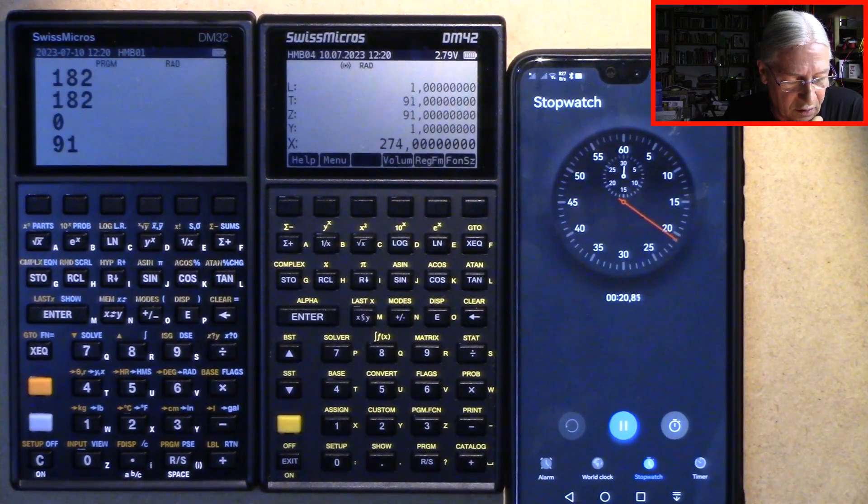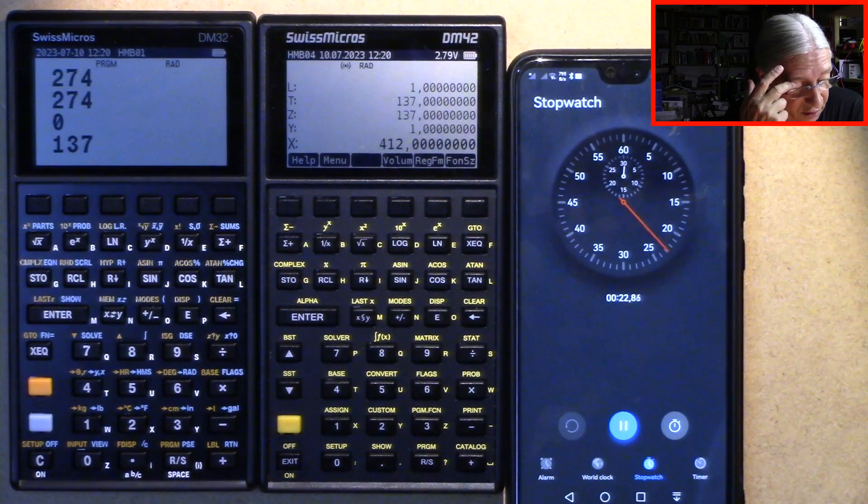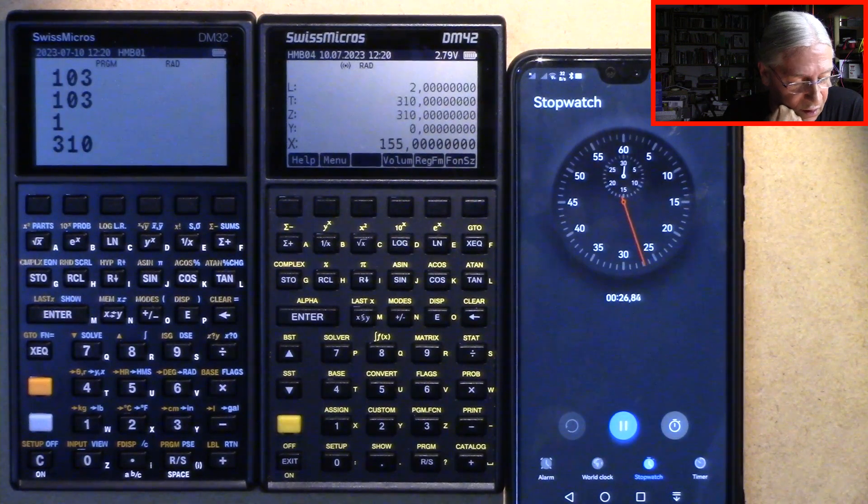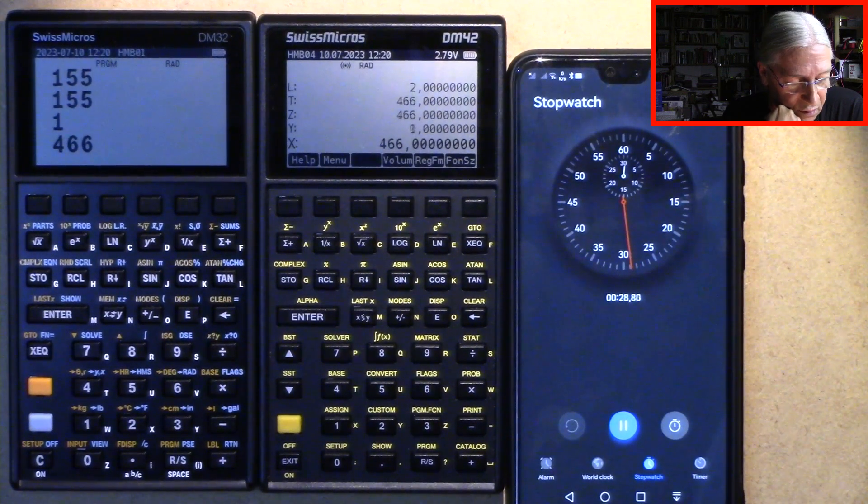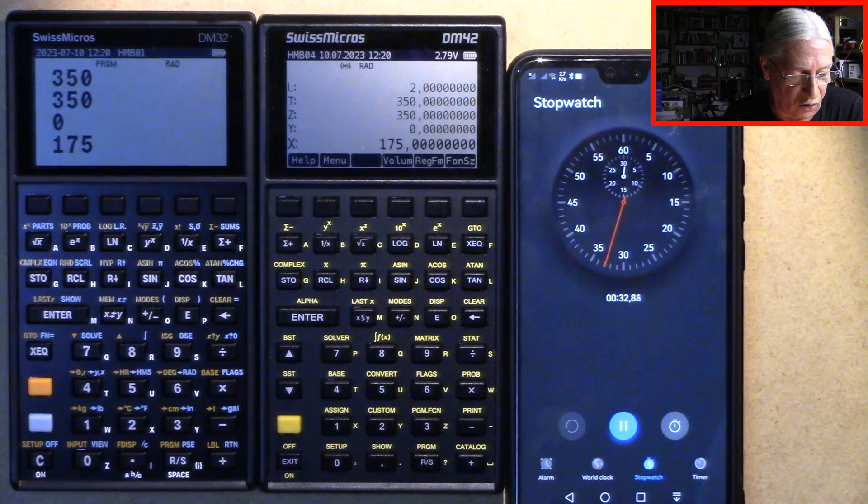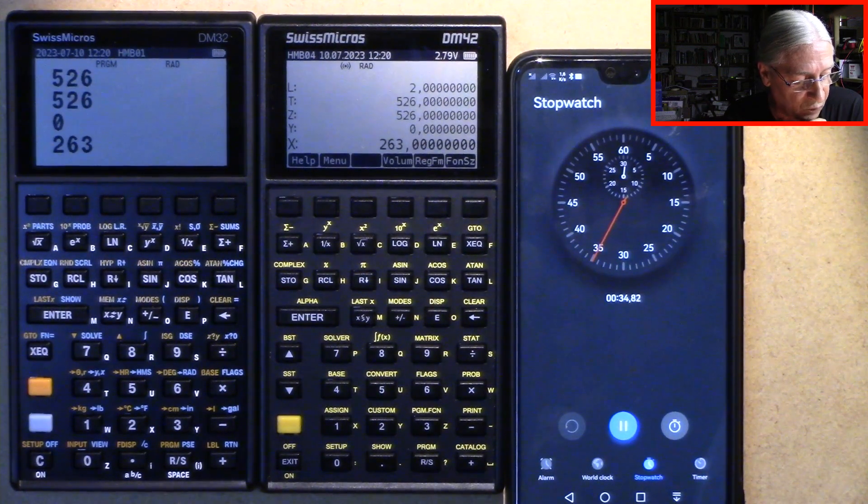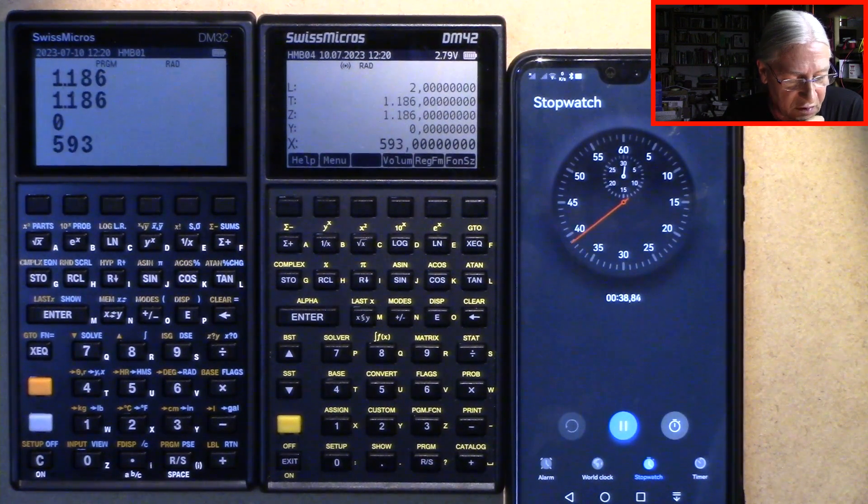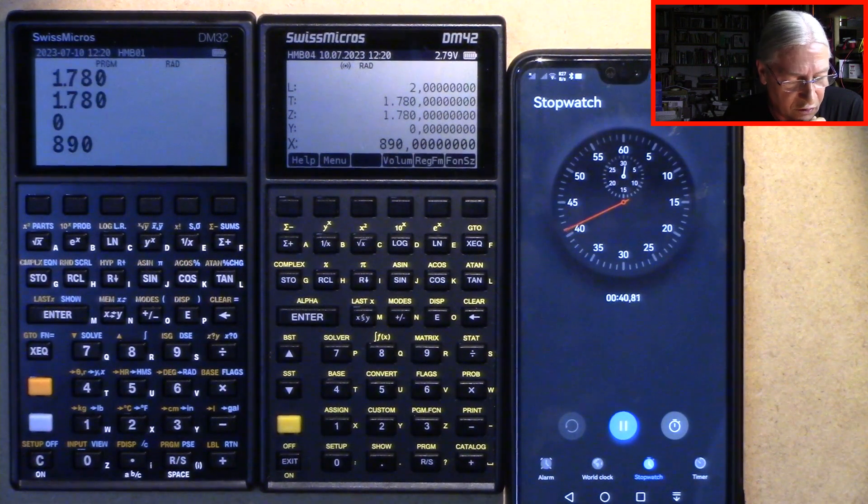The Collatz sequence is calculated only with basic arithmetic. And there are some jumps, go-to's from one label to another. So nothing very sophisticated in terms of programming.